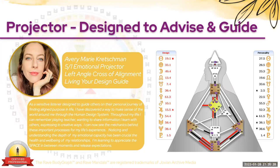My name is Avery Marie Crutchman and my aura type is that of a 5-1 emotional projector on the left angle cross of alignment. As a sensitive listener designed to guide others on their personal journey of finding aligned purpose in this life, I have discovered a way to make sense of the worlds around me through the human design system. Throughout my life, I can remember playing teacher, setting up school for my younger brother or stuffed animals, wanting to share information and expressing in creative ways.